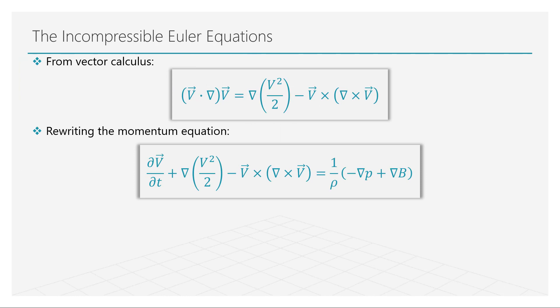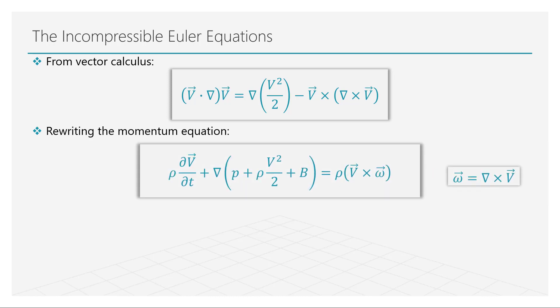Using vector calculus identities and also realizing that the curl of velocity is nothing but vorticity, we can rewrite the momentum equation as shown here. These equations now represent the incompressible, inviscid form of the Navier-Stokes equations.